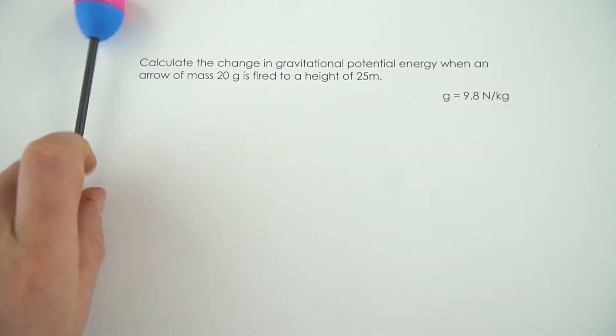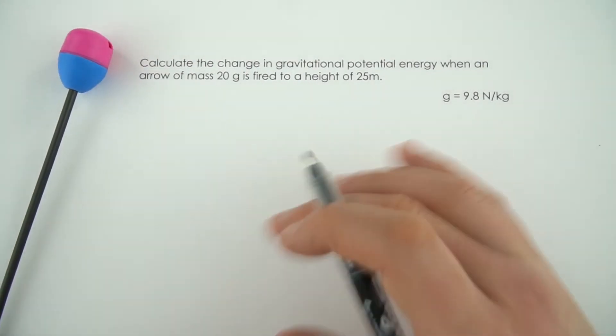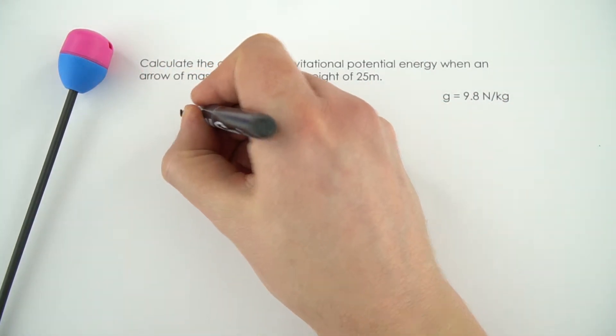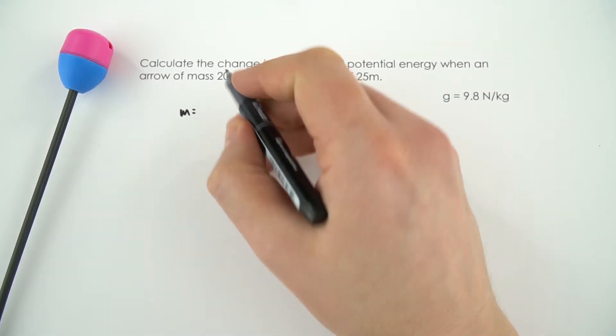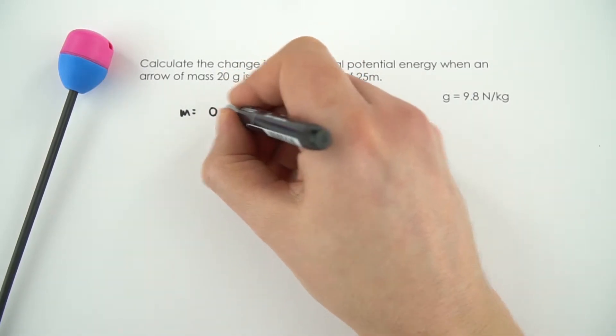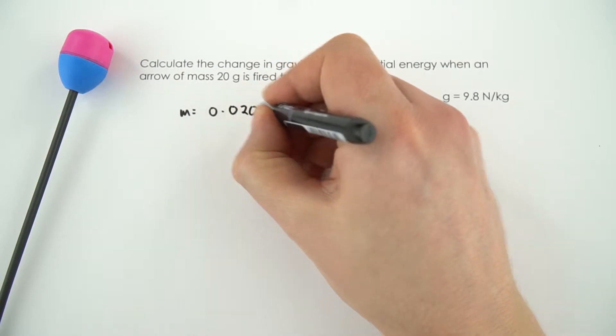So the first thing I'm just going to do is get into these good habits of writing down everything I know from the question. So the mass, because it's given here in grams, we need to convert into kilograms. We could do that dividing by 1000 and that's equal to 0.020 kilograms.